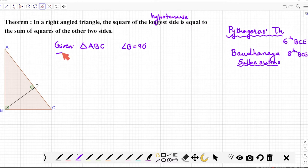And we have to prove what? We need to prove that the square on the longest side which is AC, so AC² is equal to sum of the squares of the other two sides, so that is AB² plus BC².